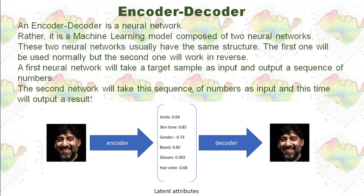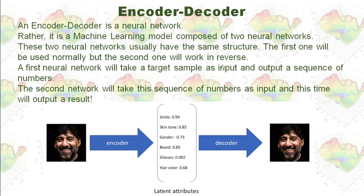Now let's take a look at this example. In order to use latent space, we use encoder and decoder. Encoder-decoder is a neural network. There are two neural networks here. These two neural networks usually have the same structure — the first one will be used normally, but the second one will work in reverse.